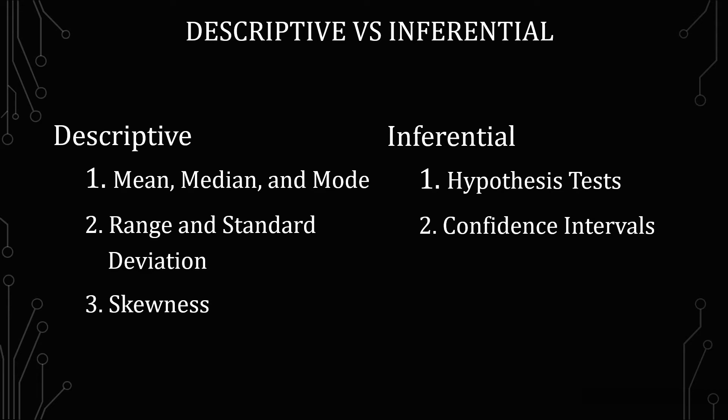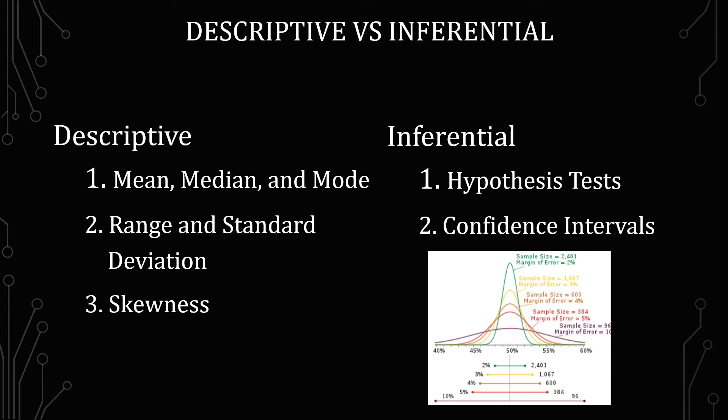The next is confidence intervals. So confidence intervals are very important because it brings in the aspect of error that the samples naturally have compared to a census when you take everything within the population. Most fields of study are unable to get a census on everything. In fact, most of the time it's impossible. So what they do is they do a survey and the survey has error attached to it. There's this margin of error rate and that's reflected in the confidence interval.